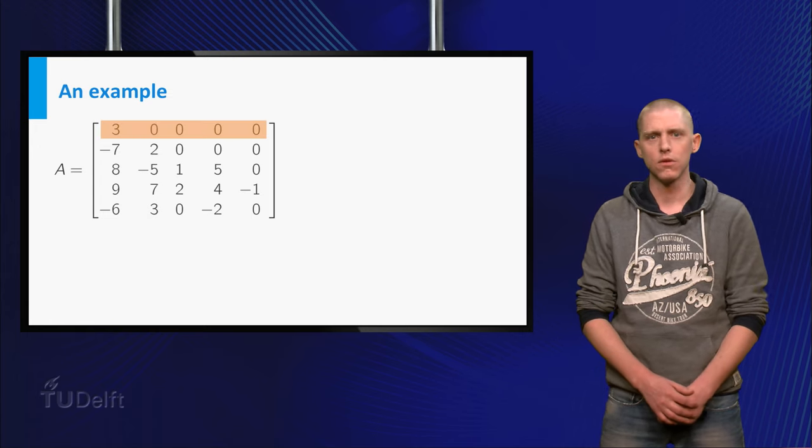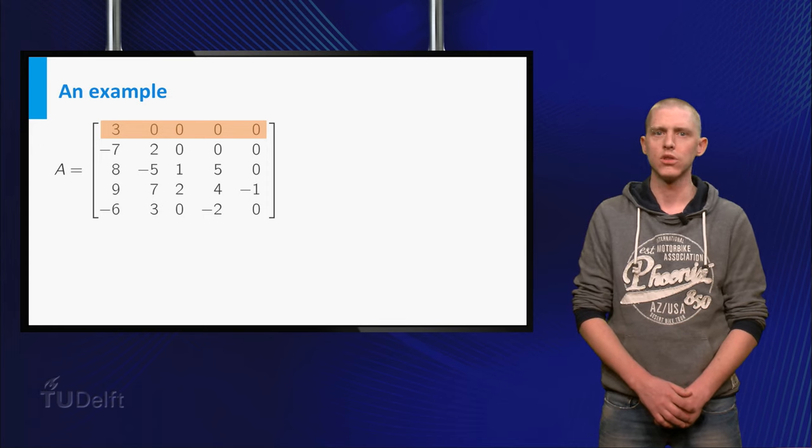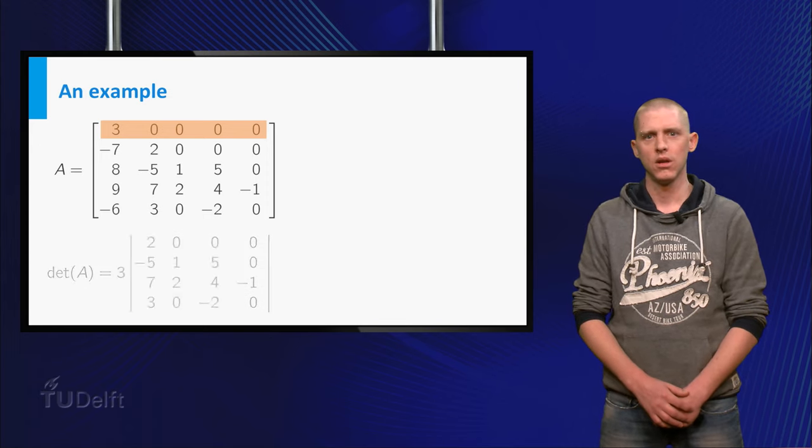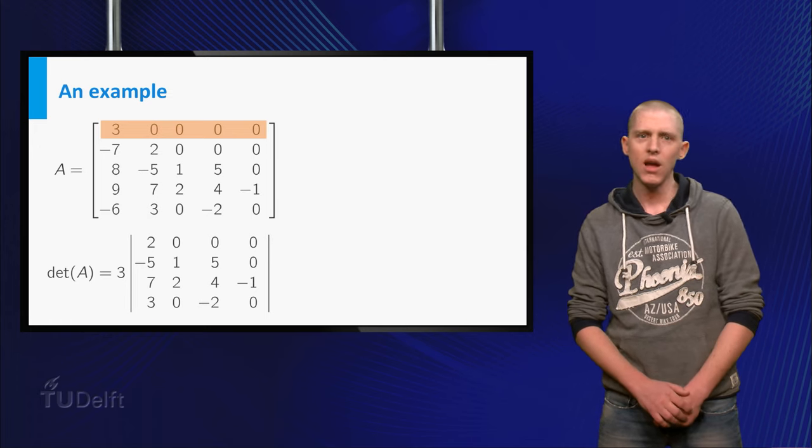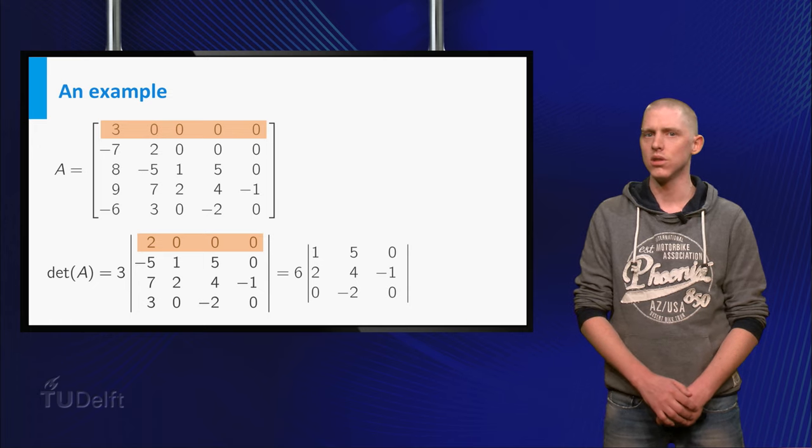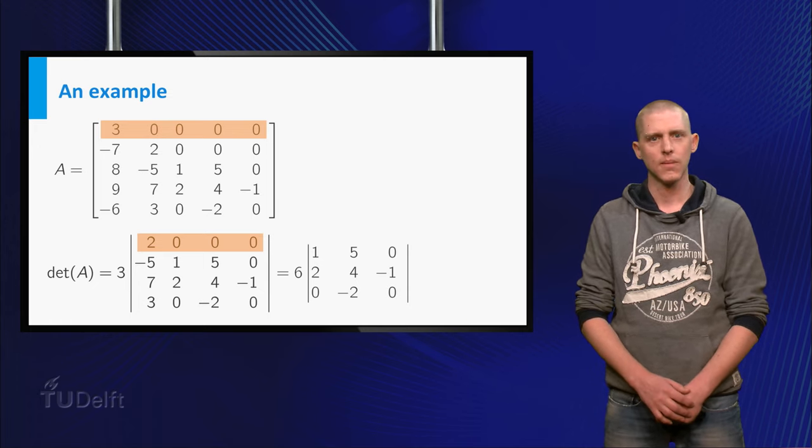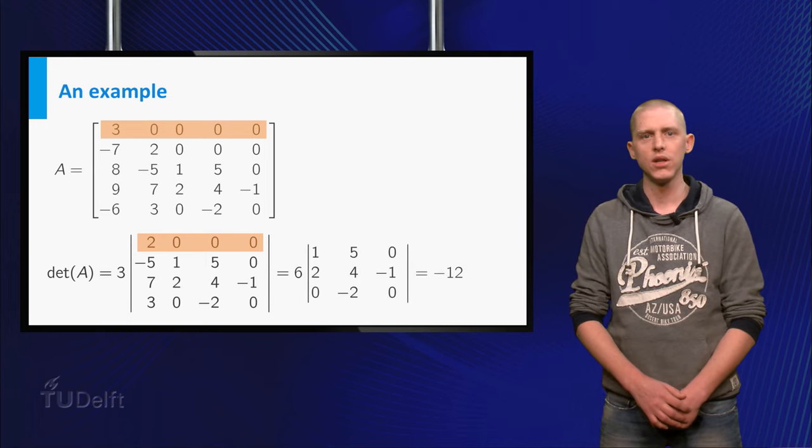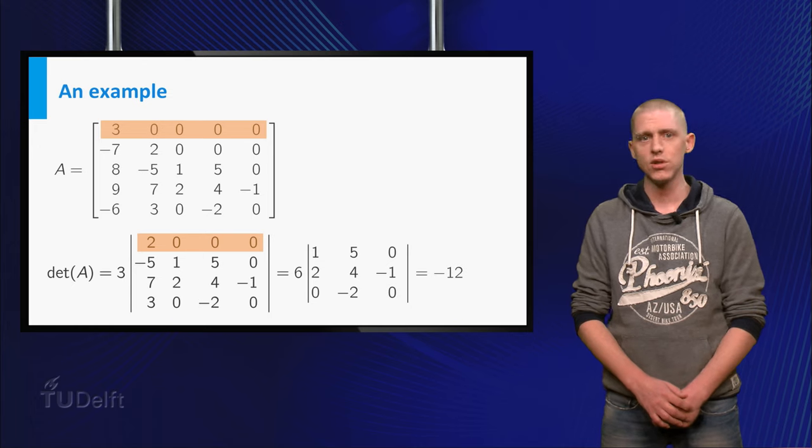The cofactor expansion over the first row gives 5 terms, of which 4 will be 0, so we will skip those. You get 3 times the determinant of one 4 by 4 matrix, and then by doing another cofactor expansion, 6 times the determinant of one 3 by 3 matrix. This last determinant was minus 2, so the determinant becomes 6 times minus 2, which is minus 12.